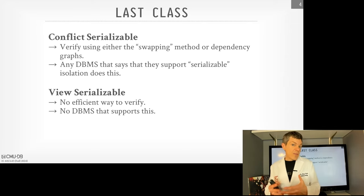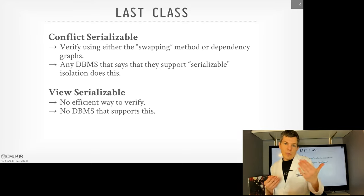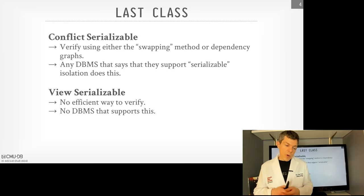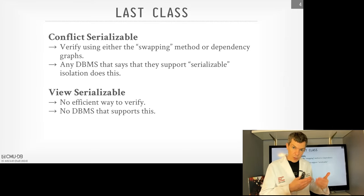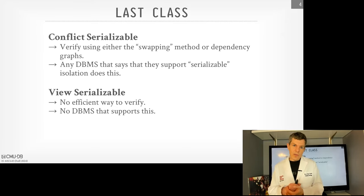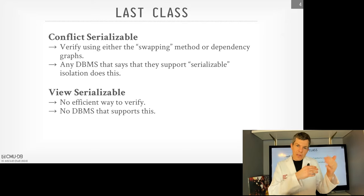We talked about conflict-serializable and view-serializable schedules. Conflict-serializable uses a dependency graph — if there are no cycles in that graph, where operations occur between different transactions on the same object in different orders, then we know that schedule would be equivalent to a serial ordering. View-serializable allows additional schedules that conflict-serializable can't, because conflict-serializable is a bit conservative. But to make view-serializability work, you need higher-level semantic understanding of what the application cares about — for example, allowing blind writes on an object.